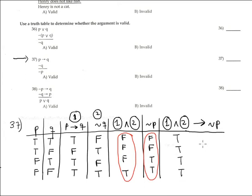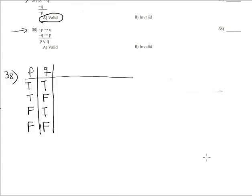One more time we have a tautology — tautology — so the argument is valid. Now problem 30A: proving this argument is valid.